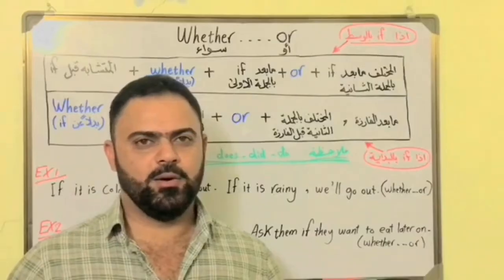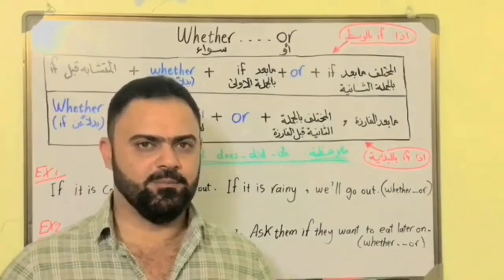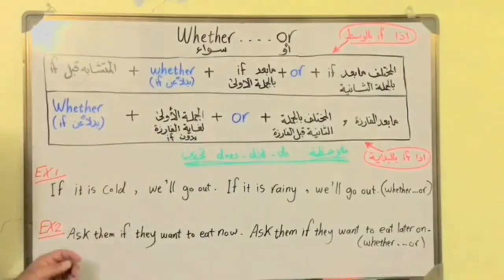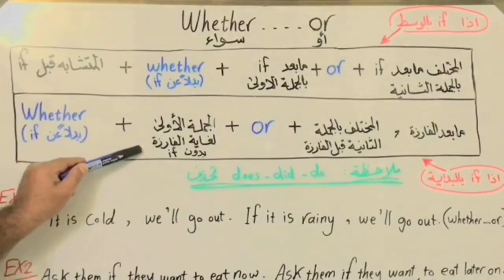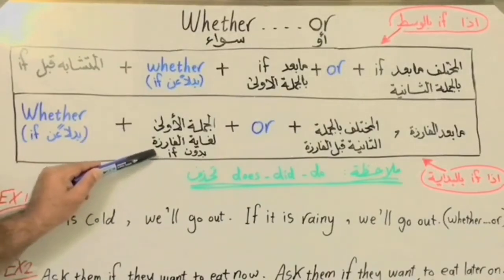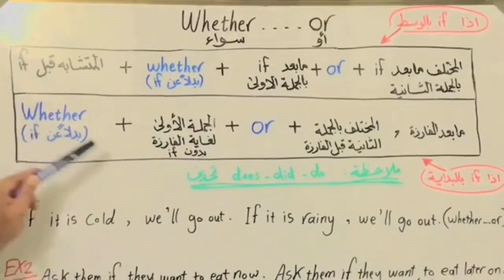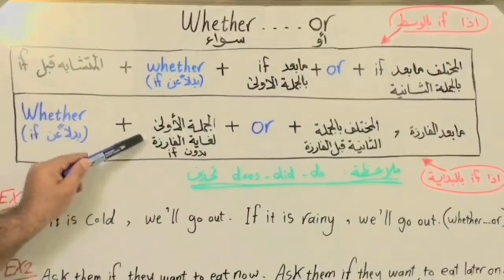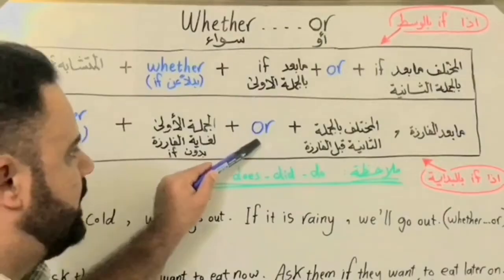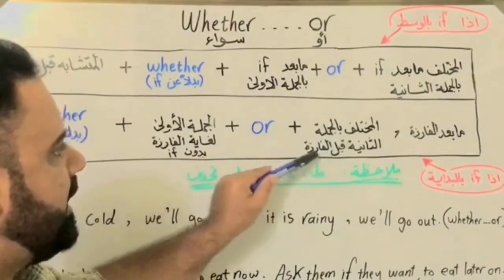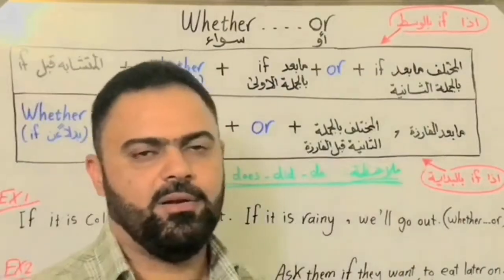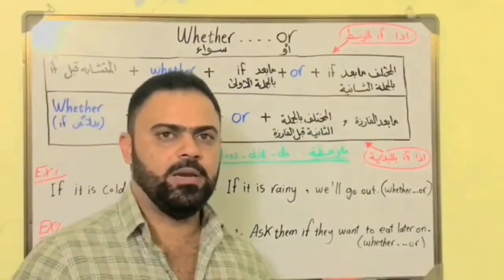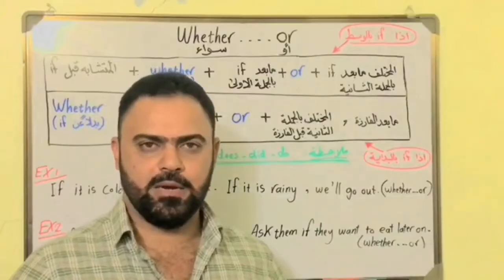يمكن تشوفون القانون صعب، لكنه بالتطبيق رح تشوفوه جدا سهل. القانون الثاني: weather — اللي أيضا نزله بدلا عن if — والجملة الأولى لغاية الفارزة بدون if. بعد ذلك or، والمختلف بالجملة الثانية قبل الفارزة، ثم فارزة، وما بعد الفارزة.